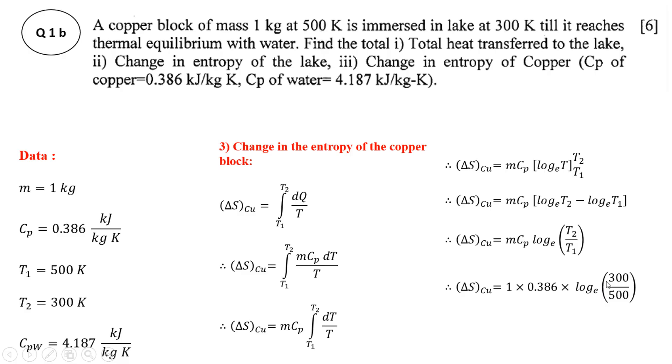And that value comes out to be negative, that is minus 0.197 kJ/K. This negative value indicates that the entropy of the copper block is decreasing because heat is transferred from the copper block to the reservoir, that is nothing but the lake.